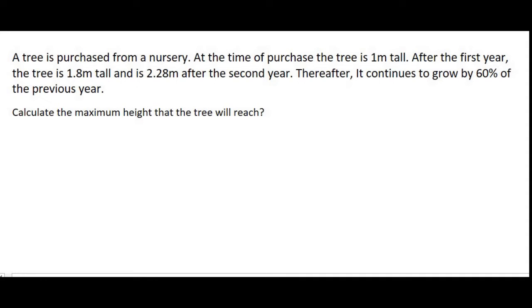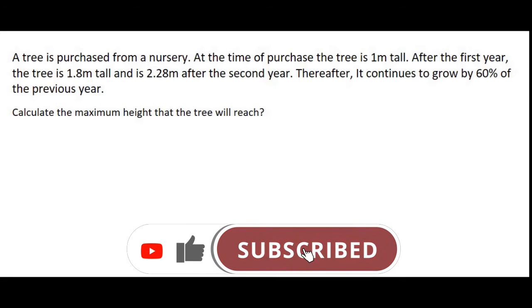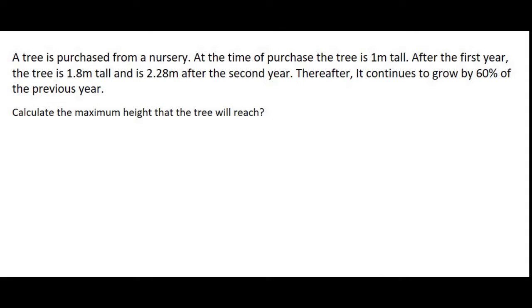So this is quite a good question. It usually confuses students at first, but if you just take the time to watch this video and pause if you need to, maybe rewind every now and then, see if you can understand the idea about how we do these questions. A tree is purchased from a nursery. At the time of purchase, the tree is 1 meter tall. After the first year, the tree is 1.8 meters tall and is then 2.28 meters tall after the second year. Thereafter, it will continue to grow by 60% of the previous year.